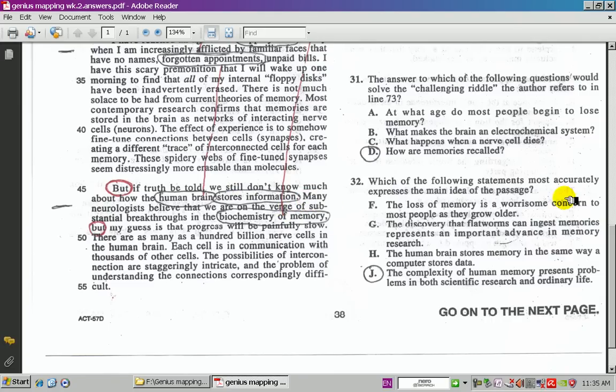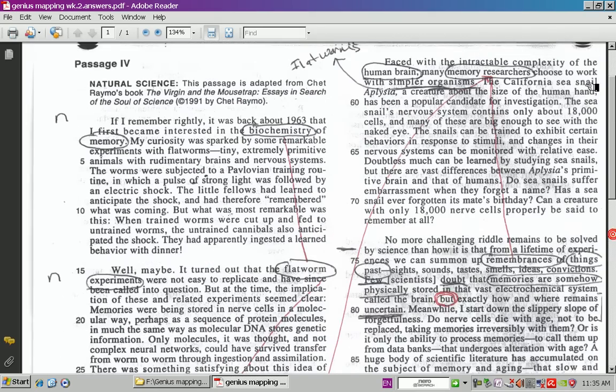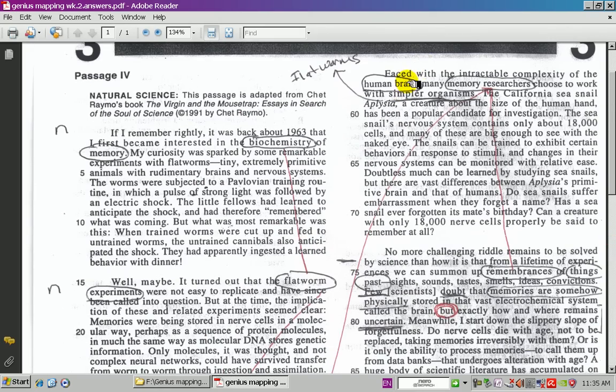Moving on to the next paragraph, it says, faced with the intractable complexity of the human brain, many memory researchers choose to work with simpler organisms. Simpler organisms goes back to the flatworm experiment. And human brain, what does your brain do? Your brain remembers. Here we have memory researchers. So it's saying that these memory researchers can't quite figure out what's going on with memory. So maybe they're going to use easier organisms than the human brain itself, referring kind of back here to the flatworm experiments.